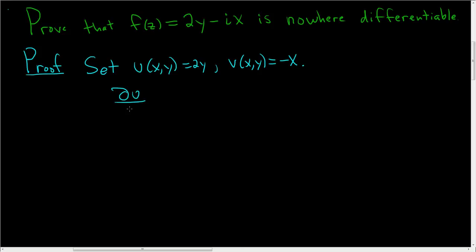So ∂u/∂x, that's equal to 0. ∂u/∂y, that's equal to 2. ∂v/∂y, that's equal to 0. So these are the same, so far so good.